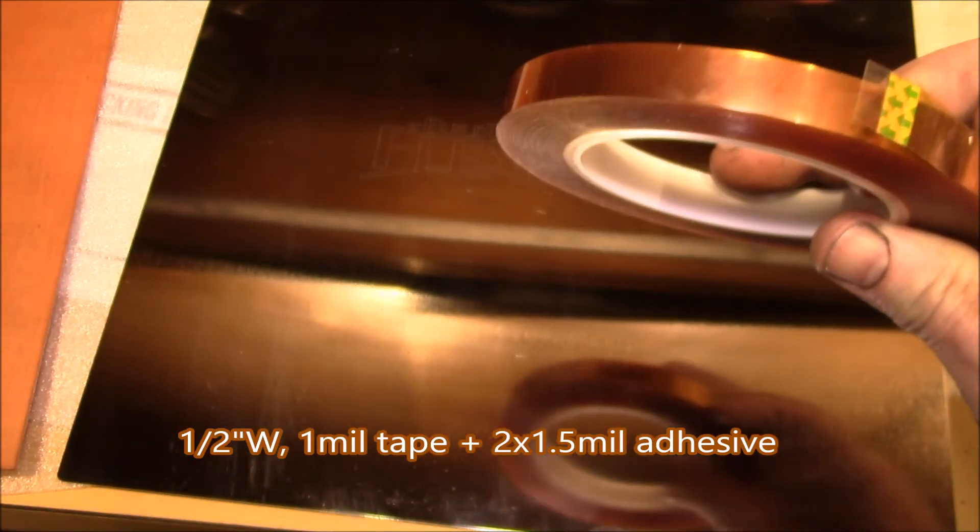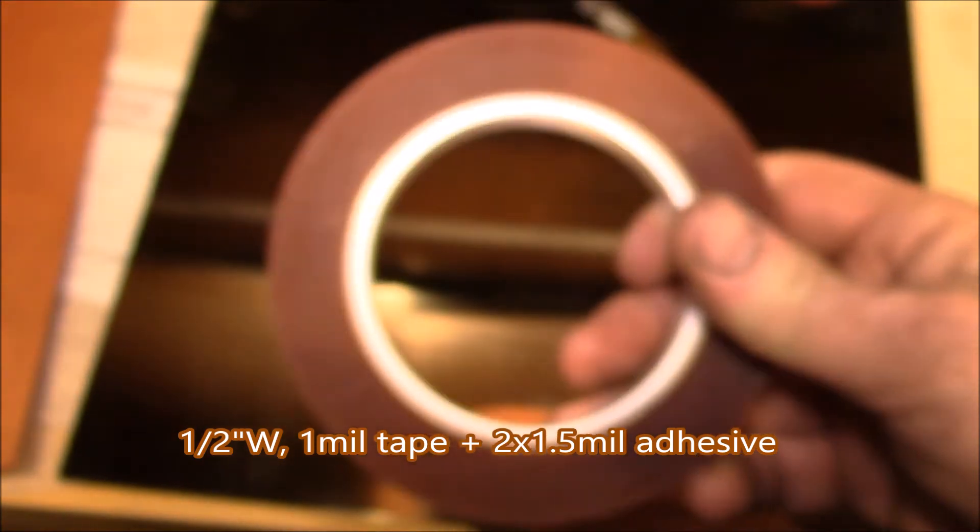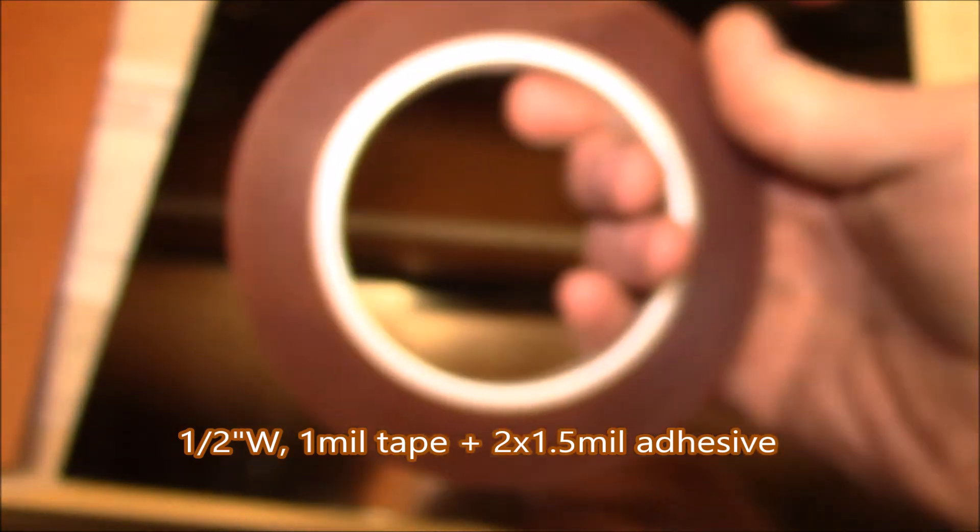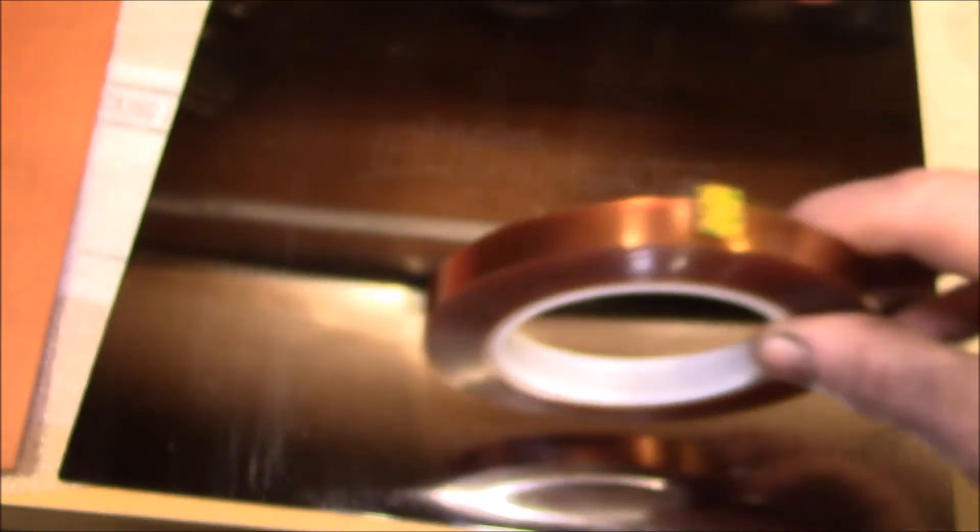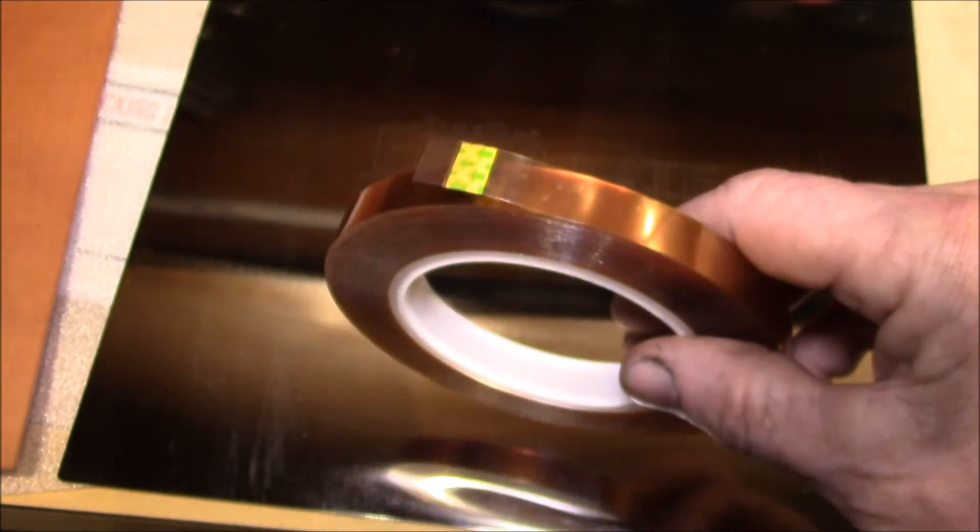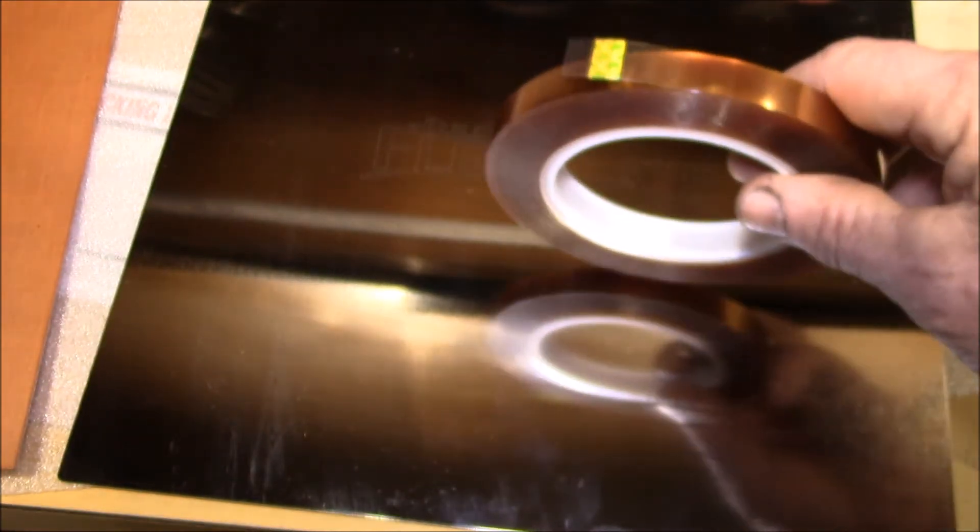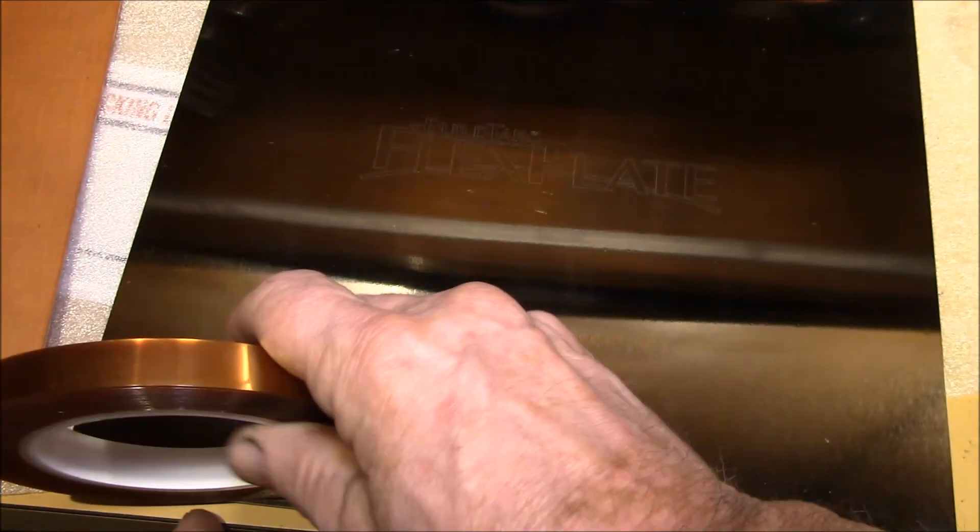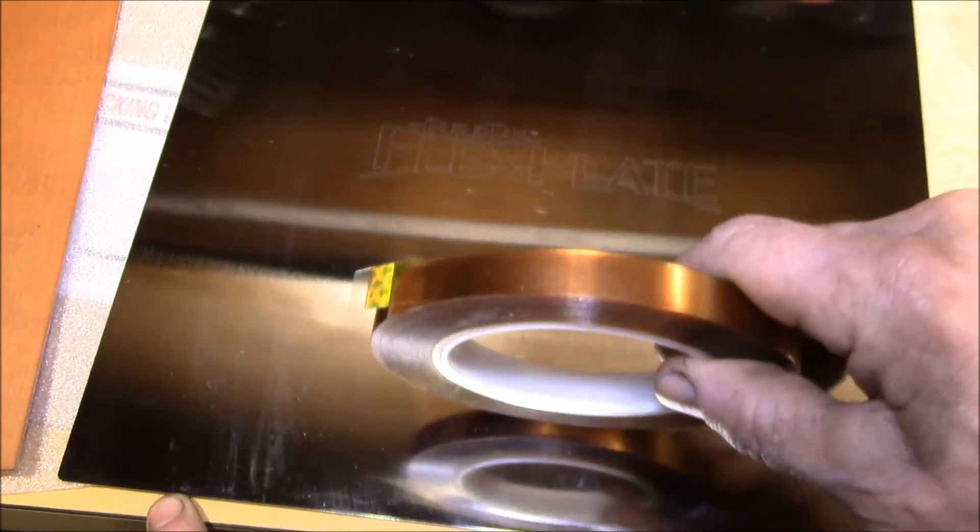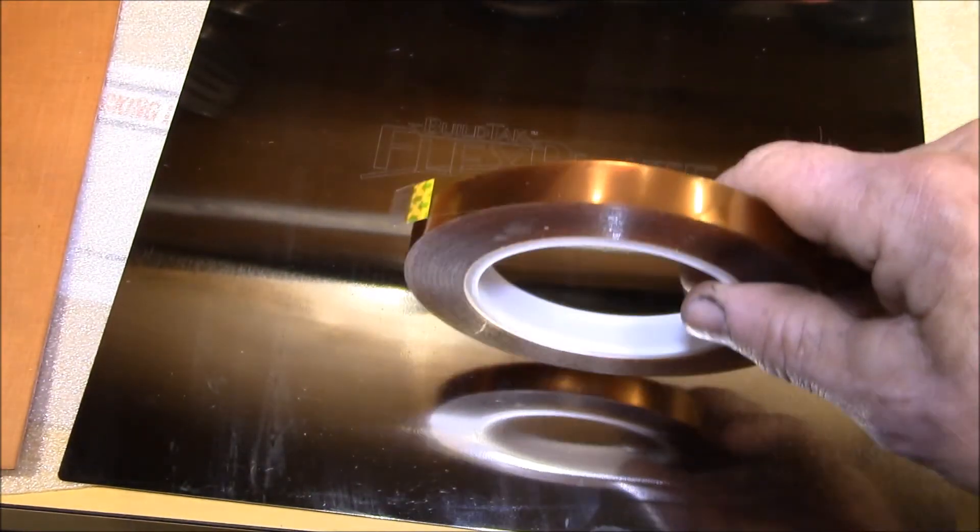You can get wider double sided kapton tape. I figured I would get the narrow stuff because it all comes in 36 yard rolls. I went with the narrower tape because I don't want to overlap at all, so with the narrow tape I can run right along the edge and then maybe space out every three quarter inch just so I don't have to be perfectly lined up - leave small gaps between the rows of tape.